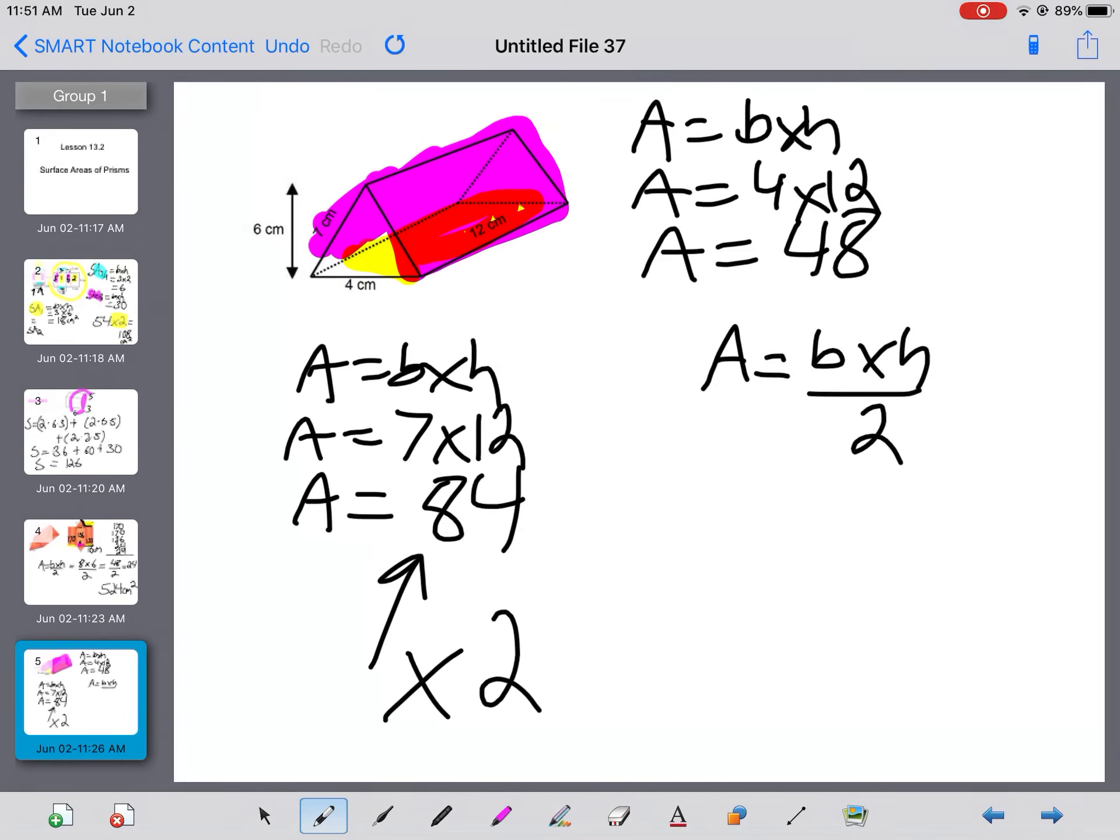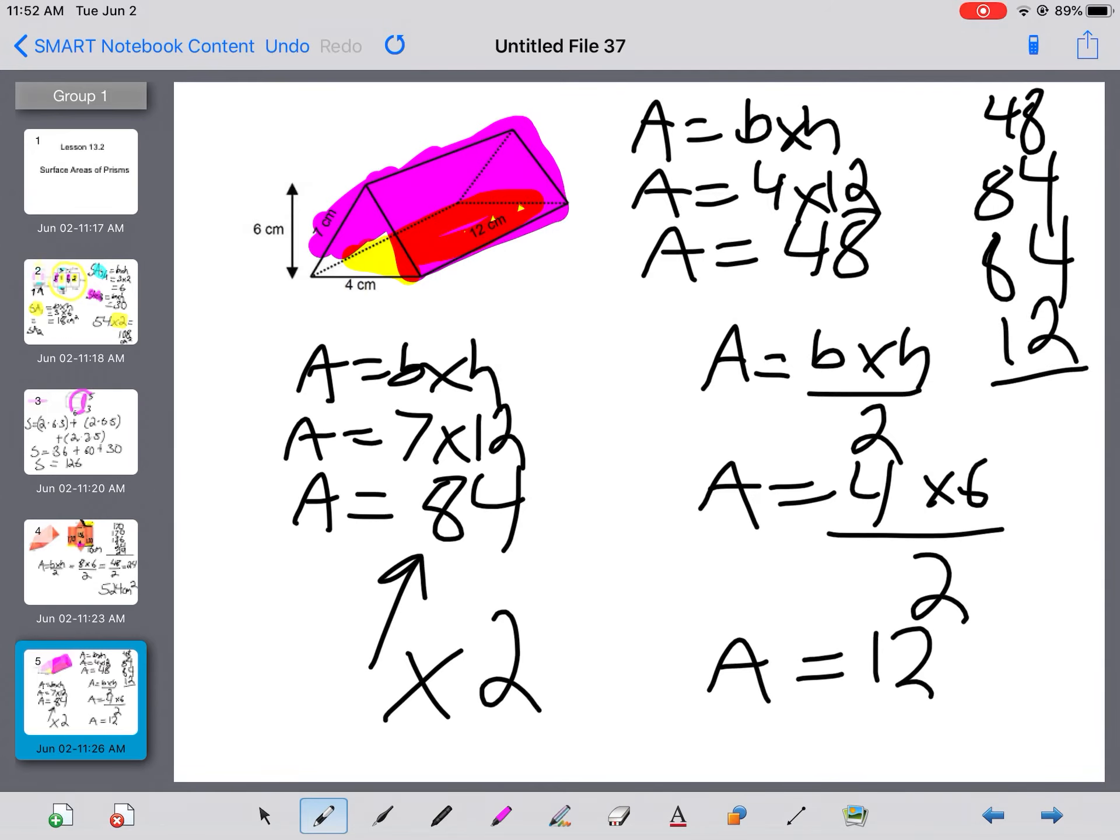Now we find the area of our rectangle. Base times height over 2. My base is 4, but what is my height? It's that 6 centimeters going up. So I would get 12. Then when I add them all together, I'm going to add 48, I'm going to have 84 two times, and I'm going to have 12 two times because it's either side of my rectangular prism. And then I would add those all together.